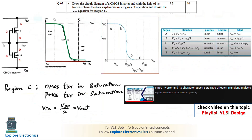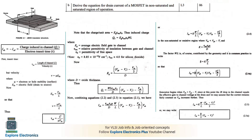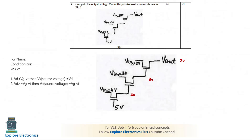Then the next question — D flip-flop is explained, CMOS inverter is explained with respect to regions, and we have derived the expression for V-out. Then derivation for the drain current of MOSFET in non-saturation and saturation region is explained in the previous video. Also the problem related to pass transistors is discussed and solutions are given.